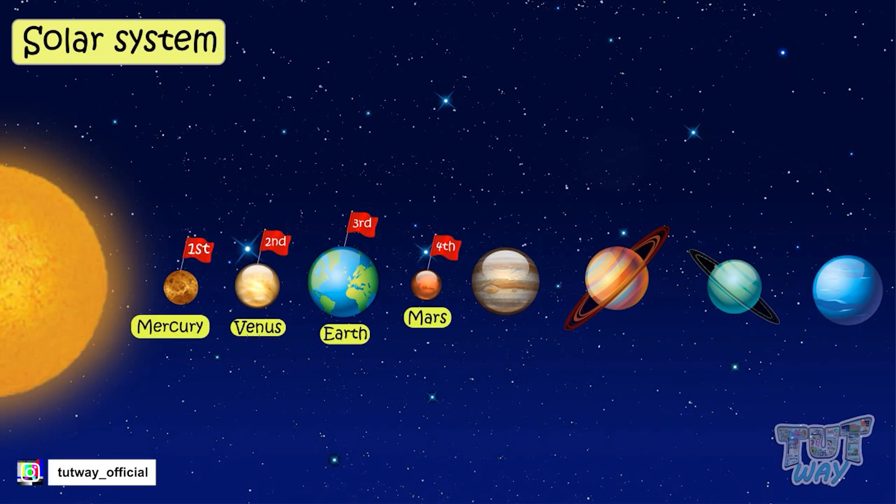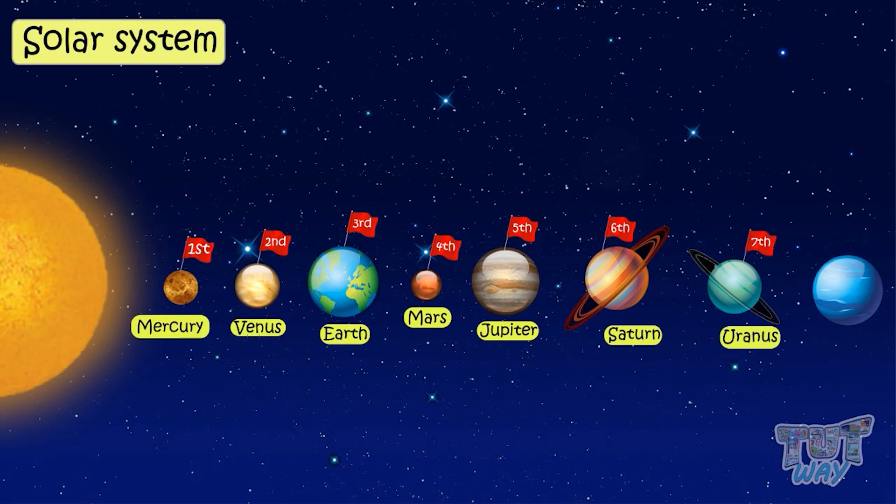Then Jupiter, then Saturn, then Uranus, and Neptune, in the last which is farthest from the Sun.